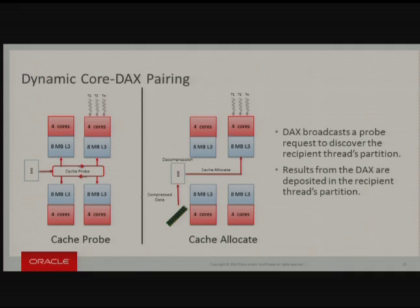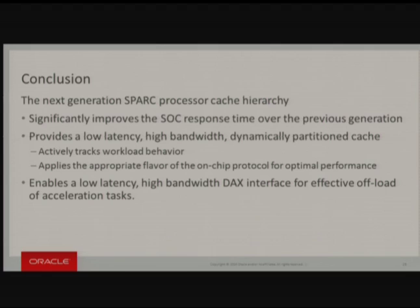In summary, the next generation SPARC processor cache hierarchy significantly improves SOC response time over the previous generation. It provides a low-latency, high-bandwidth dynamically partitioned cache that actively tracks workload behavior and applies the appropriate on-chip protocol flavor for optimal performance. It also enables a low-latency, high-bandwidth DAX interface for effective offload of acceleration tasks. The presenters acknowledged contributions of everyone who worked on the M7 program and thanked Hot Chips for the opportunity.